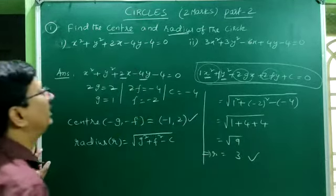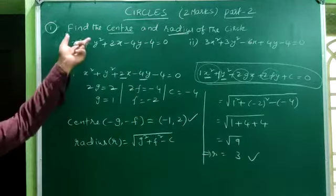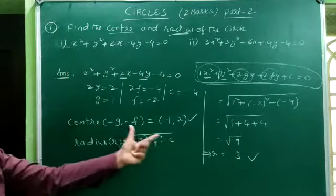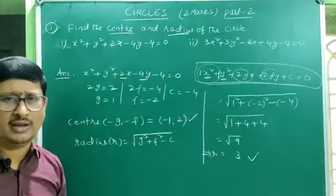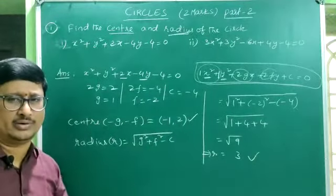So the center and radius of the given circle are obtained as (−1, 2) and 3. Have a note.